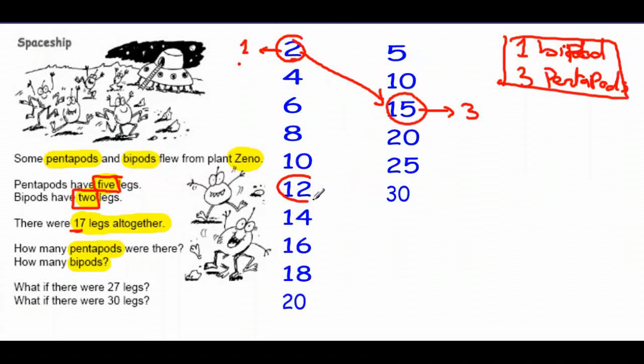So I have 12 legs and 5 legs. 12 legs means 6 pipods. 5 legs means 1 pentapod. So the other solution here is 6 pipods and 1 pentapod.